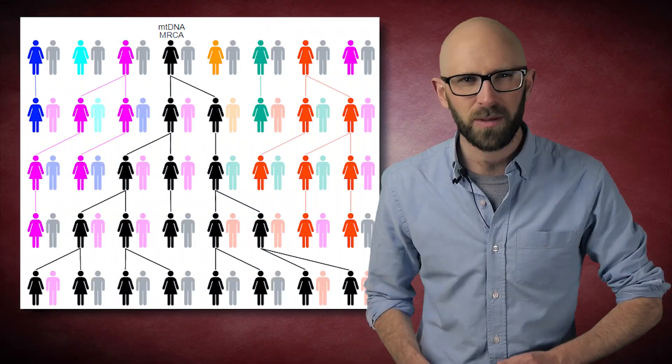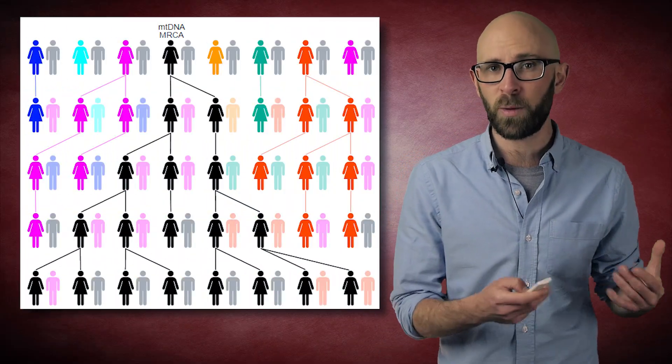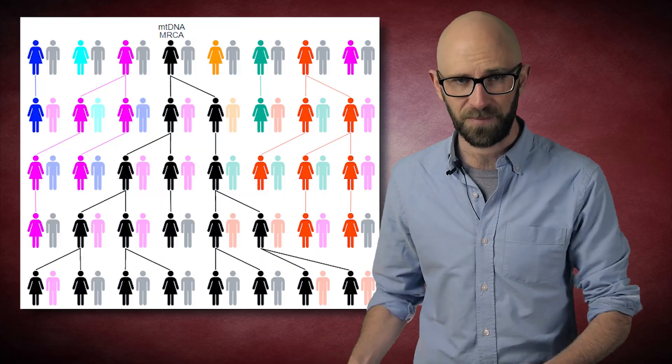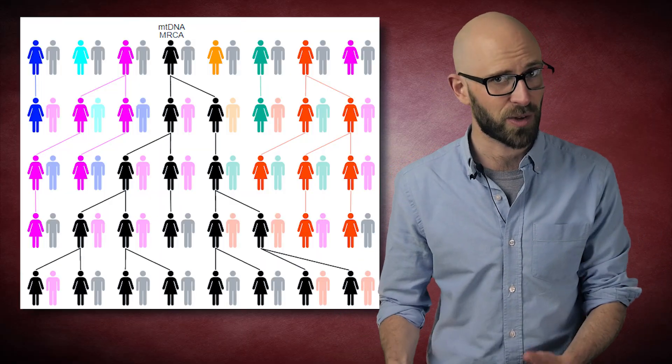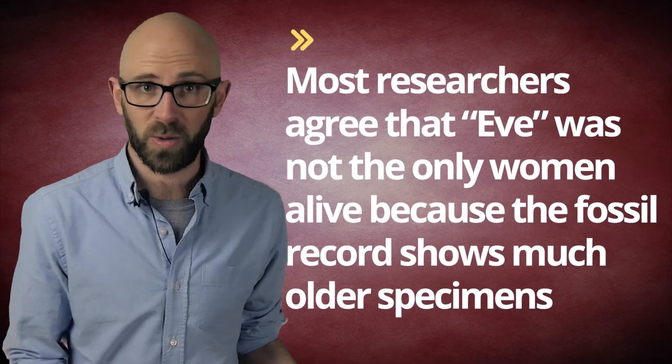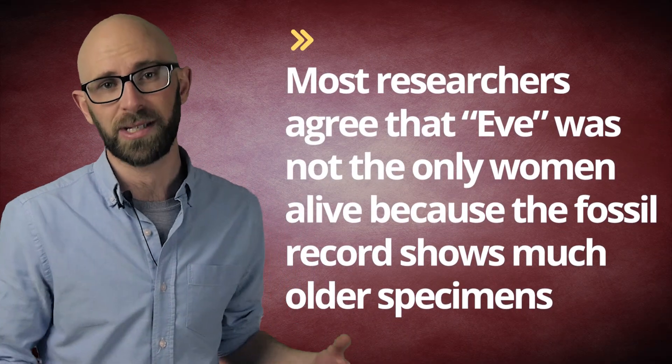Even though biologists have shown that all people are descended from one person, this does not mean that only one female was alive at that time. It simply means only one set of genes have been passed down from a single point in history. Most researchers agree that this so-called Eve was not the only woman alive because the fossil record shows much older specimens.